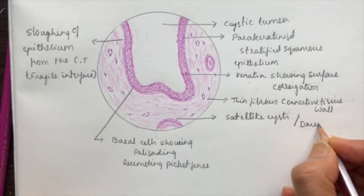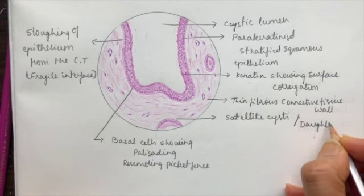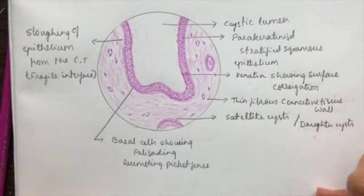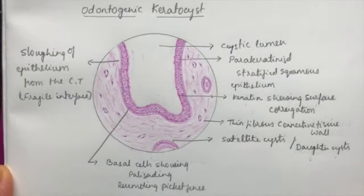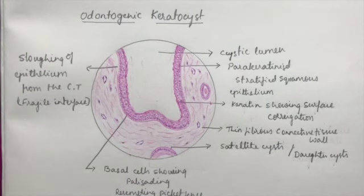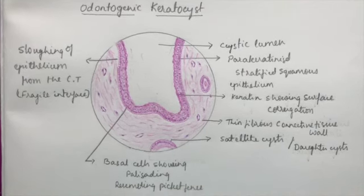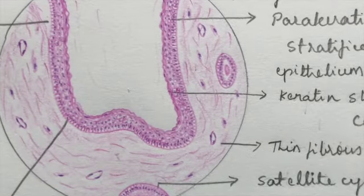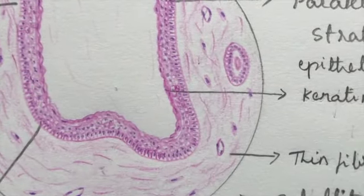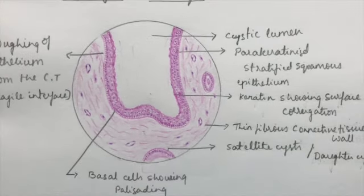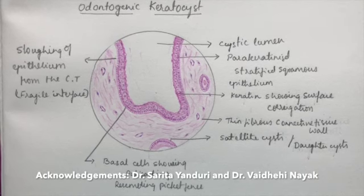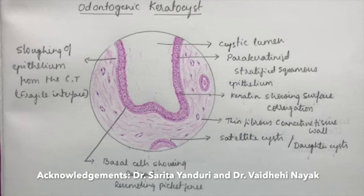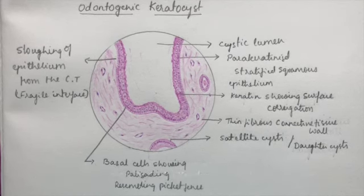This is the drawing of odontogenic keratocyst. Hope you all liked it. Please feel free to comment on the channel if you have any doubts. I will be back with another histopathology diagram. Till then, see you all, bye.